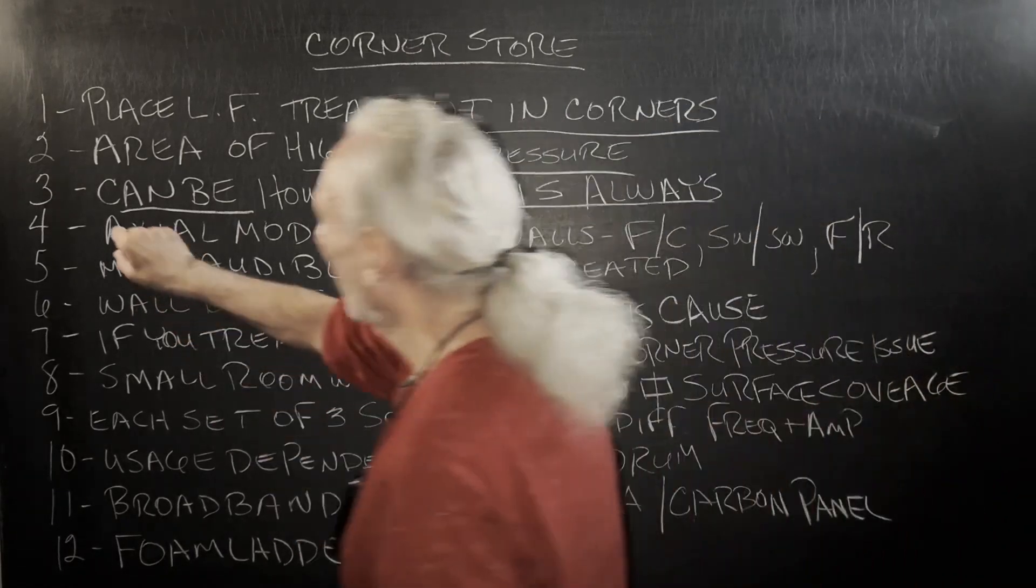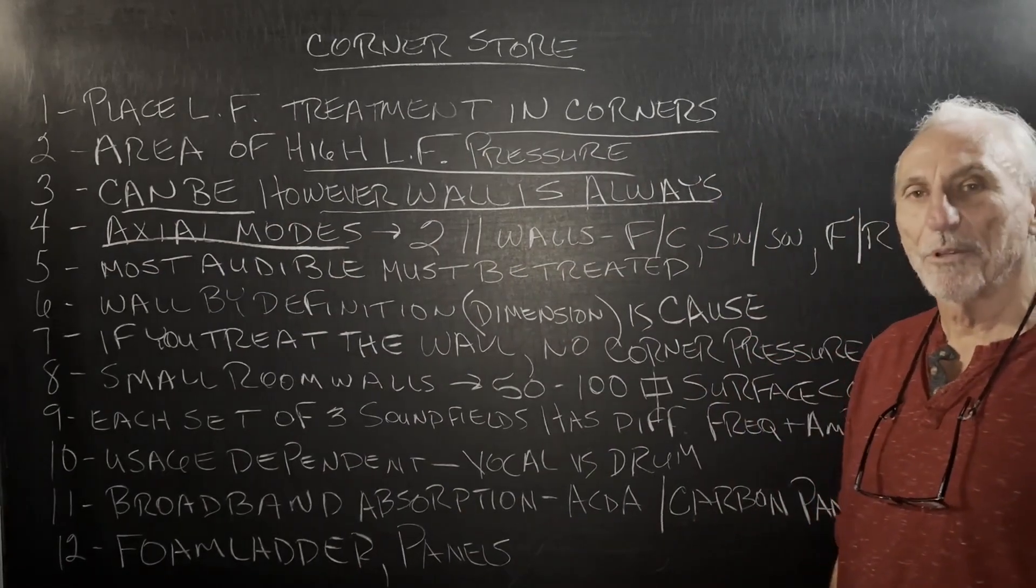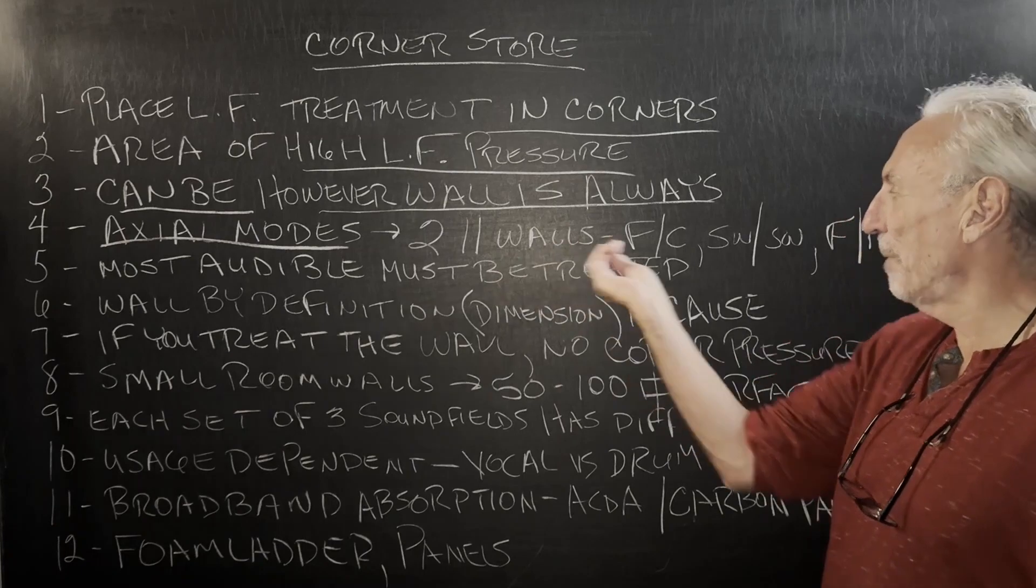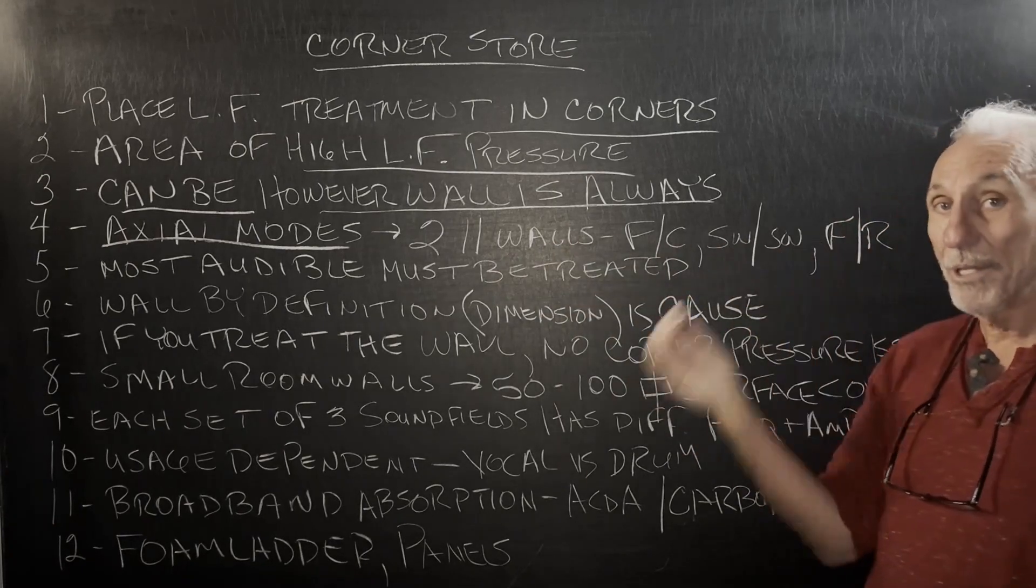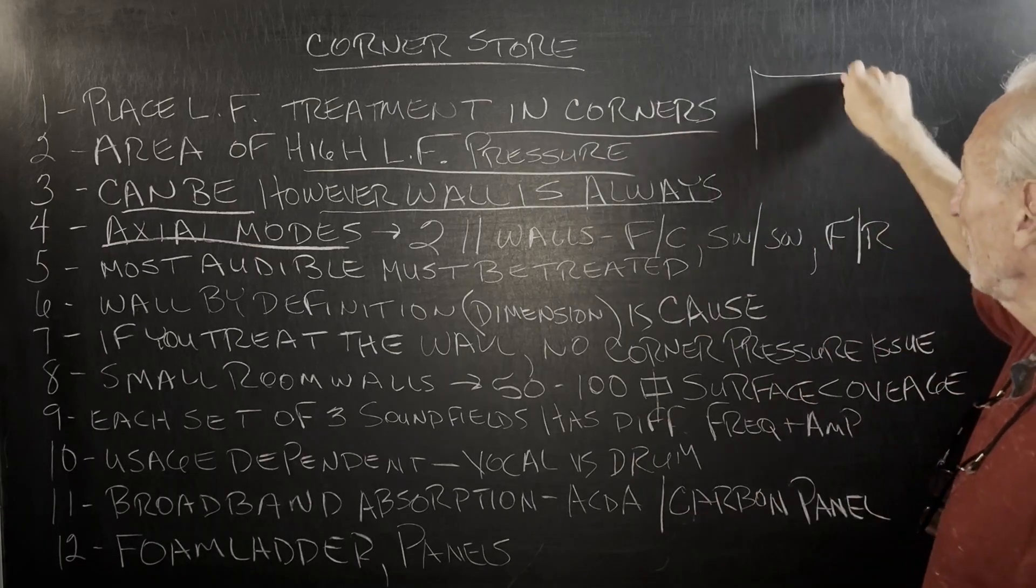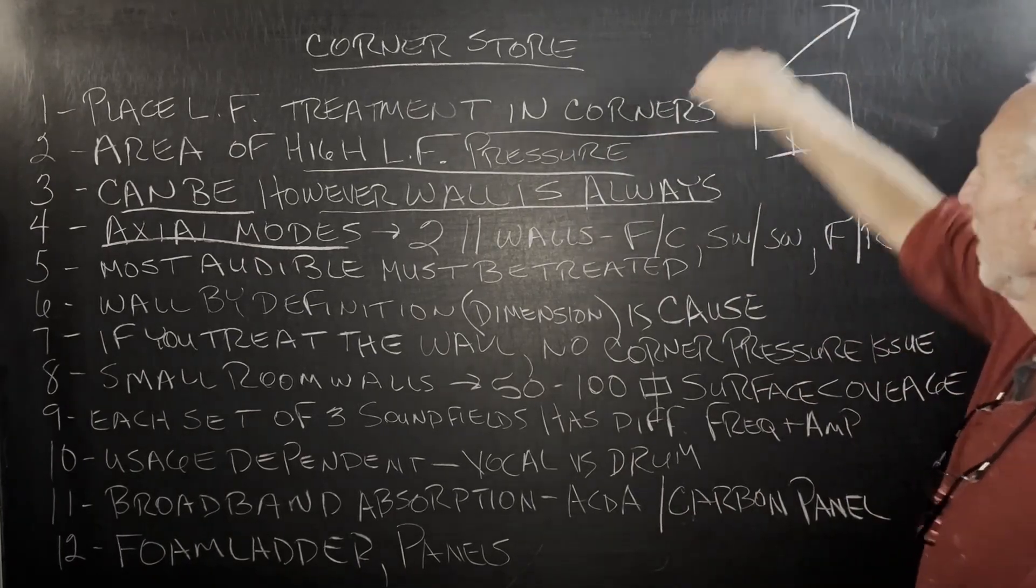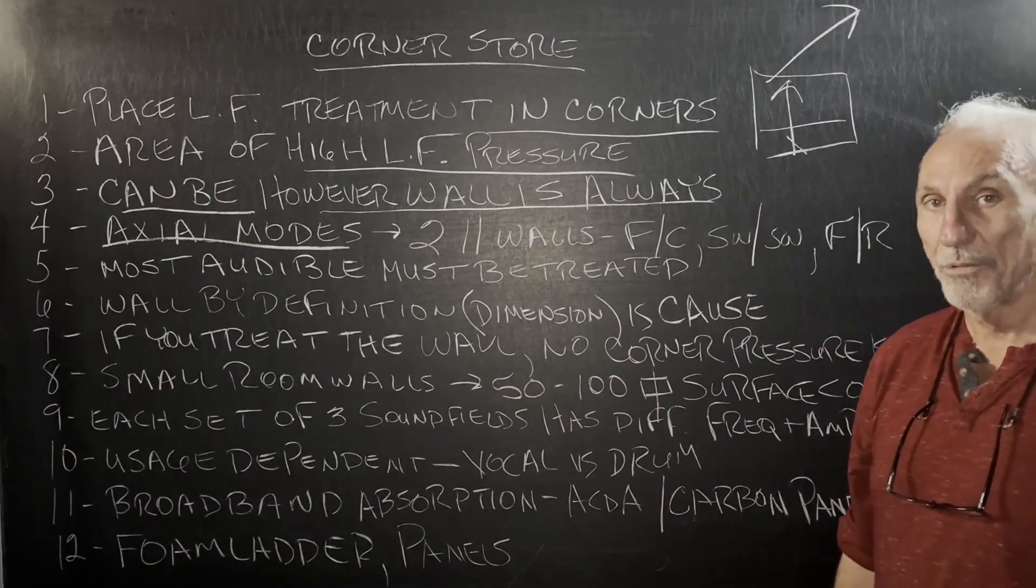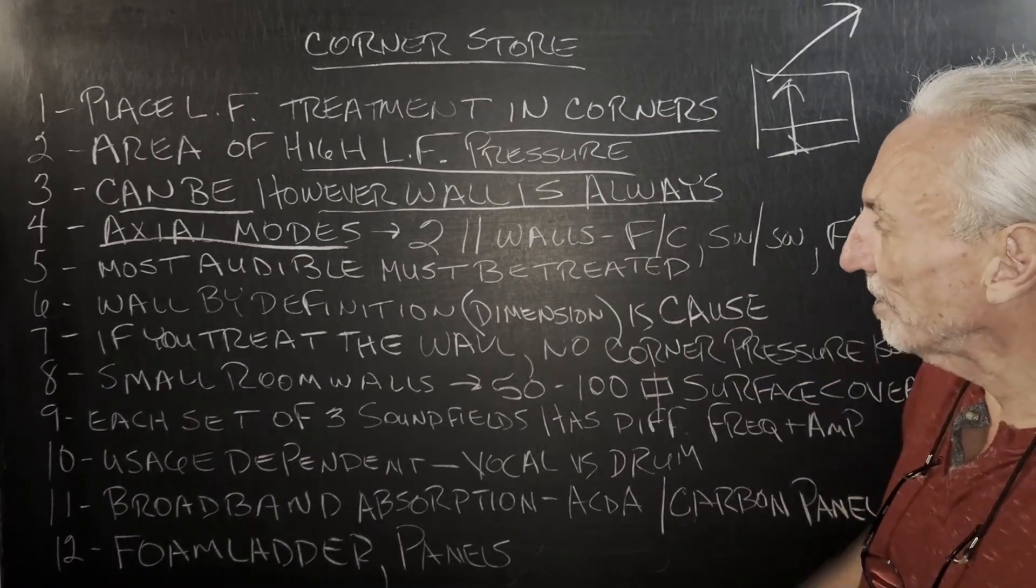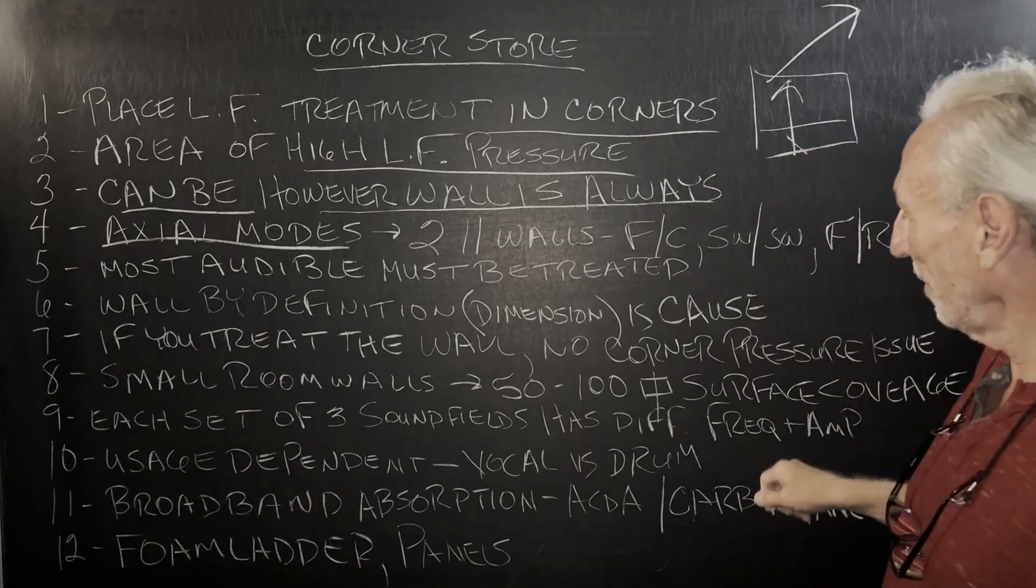So what do we have? Well, we have those darn axial modes. Those are the most powerful of the three, right? Tangential and obli. So it's between two parallel walls, floor, ceiling, sidewall, sidewall, front to rear. Remember, we got three sound fields, three sound fields in a row, right? Floor, ceiling, sidewall, sidewall, front to rear. Three. All different. Okay. Based on the dimension creates the problem. All at different frequencies and amplitude.